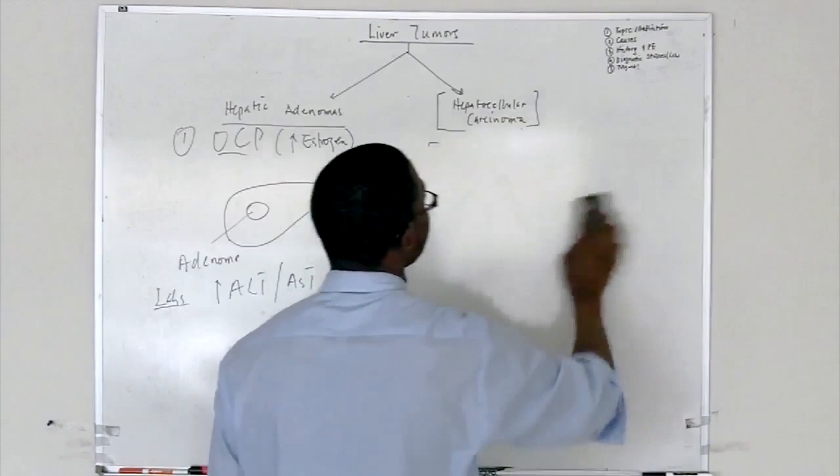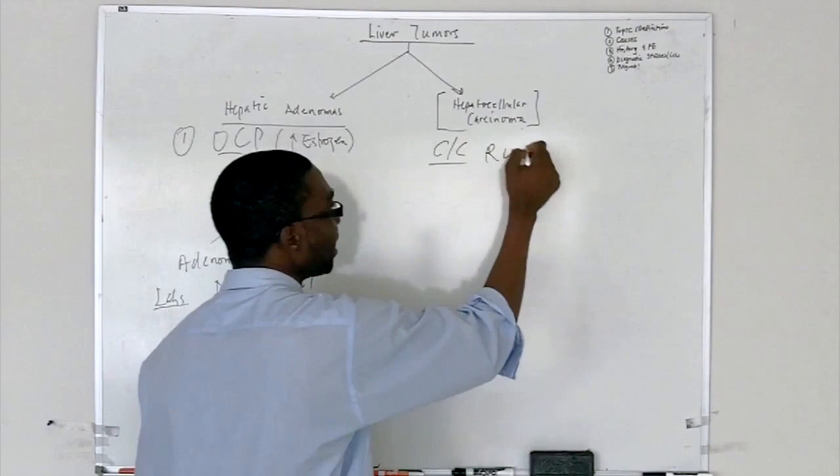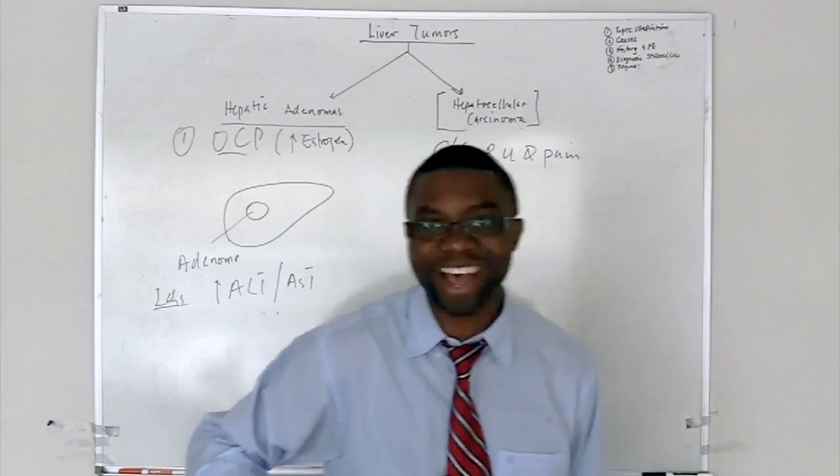So, what are these patients going to be complaining of? Right upper quadrant pain. Why are they complaining of right upper quadrant pain? Because the liver is sitting on the right side. It makes perfect sense. The liver is sitting right there. So, they come with right upper quadrant pain.